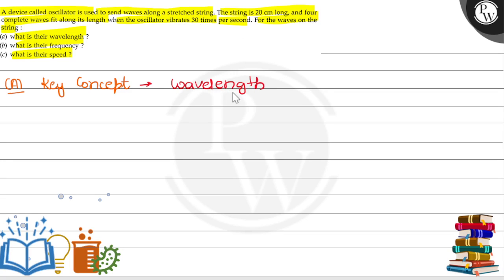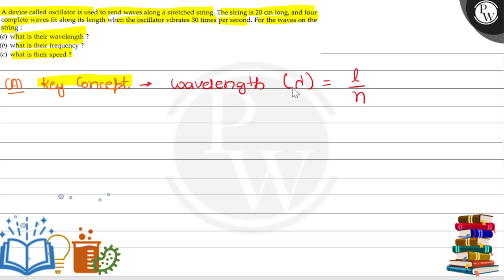First, you have to know about the relation of L, n, and wavelength. We need to define wavelength in terms of length L and n — that is the key concept here. So lambda equals L upon n. The key concept is the formula of the wavelength.